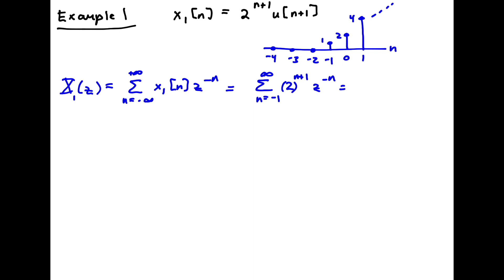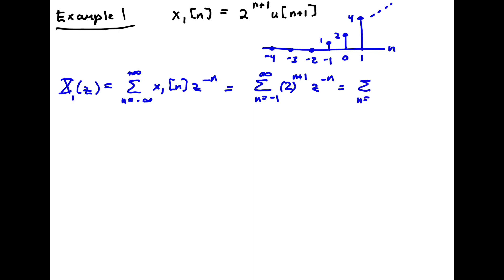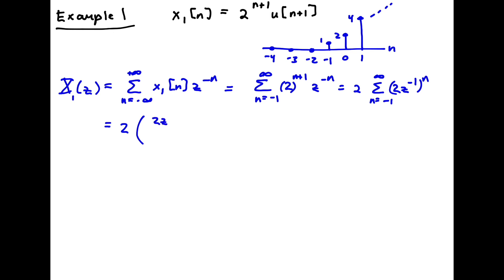We rearrange by pulling a factor of 2 out front, leaving the sum from n equal minus 1 to infinity of 2z inverse to the n. This is a geometric series. The first term is 2z inverse to the minus 1, and using the partial sum formula we get 2 times the quantity 2z inverse to the minus 1 minus 2z inverse to the infinity plus 1, all over 1 minus 2z inverse.